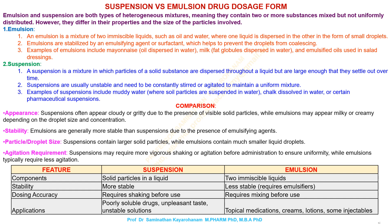Particle and droplet size: suspensions contain larger solid particles, while emulsions contain much smaller liquid droplets. Agitation requirement: suspensions may require more vigorous shaking or agitation before administration to ensure uniformity, while emulsions typically require less agitation.